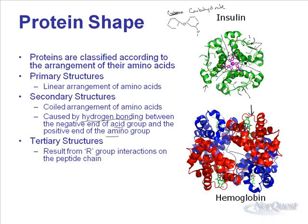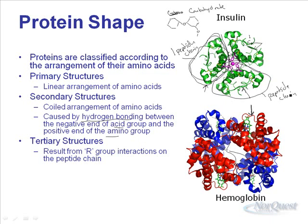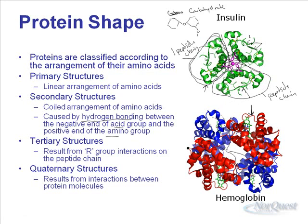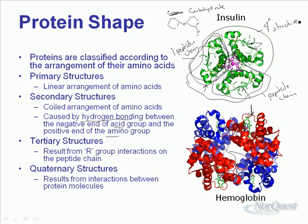Tertiary structures come from the R group interactions and represent the whole structure of a single peptide chain. The final classification is quaternary structures, which result from interactions between multiple protein molecules. Insulin, for example, has a quaternary structure made of three tertiary structures interacting together. You don't have to worry too much about the different classifications, but essentially these shapes are based on interactions between different parts of our amino acids in these long chains — and again, hydrogen bonding plays a key role.